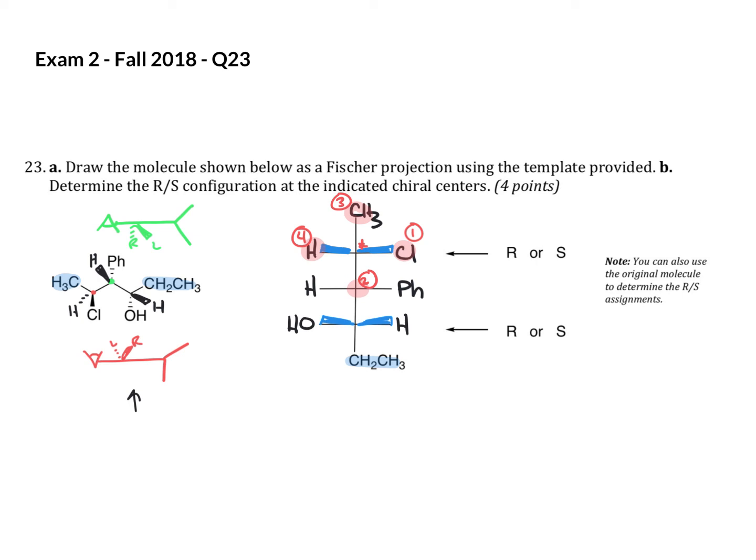All right, so now we can draw our curved arrow from one to two to three. It looks R, but by definition priority four is out in a Fischer projection. So it's really the S configuration.